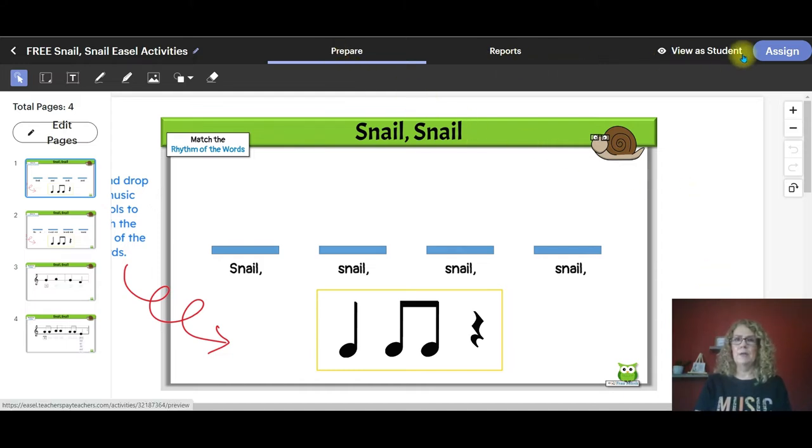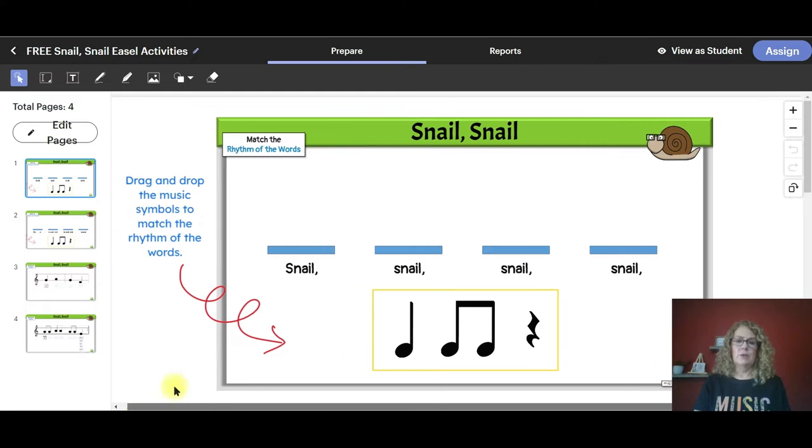Now I want you to notice the tabs up in the top ribbon. The prepare tab is where you have the option of making changes to the activity. You might want to customize the directions or change the color or the font or you might even want to add some additional answer boxes. Our activities are ready to assign.